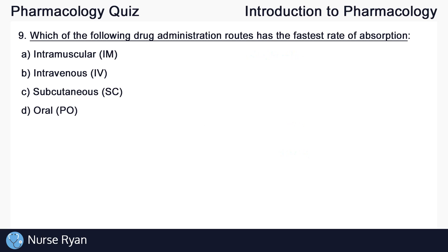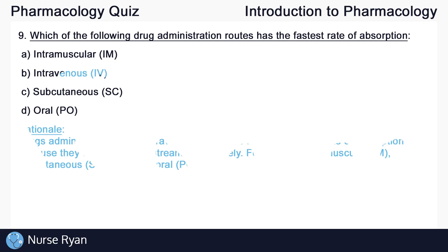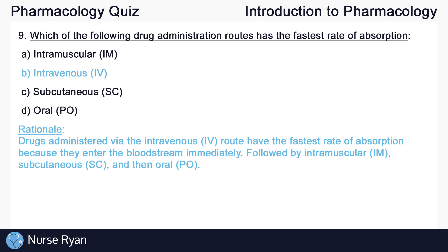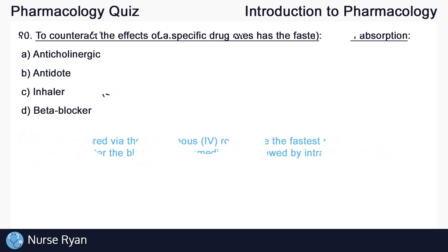Question nine: Which of the following drug administration routes has the fastest rate of absorption? That would be B — intravenous, or IV. Drugs administered via the intravenous route have the fastest rate of absorption because they enter the bloodstream immediately. The next quickest on this list is intramuscular, followed by subcutaneous, and oral is the slowest.